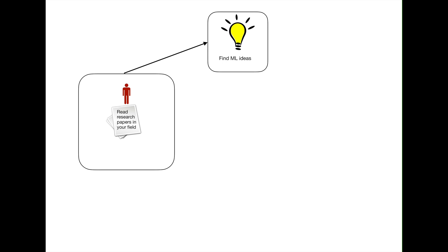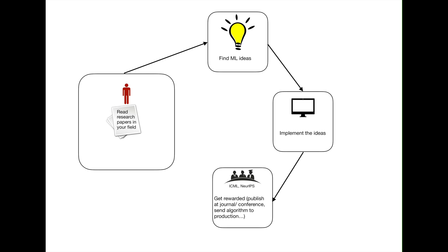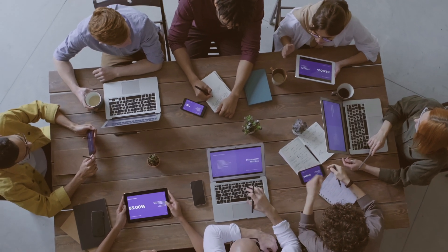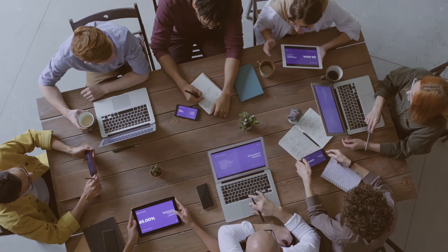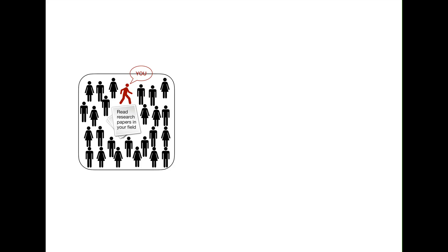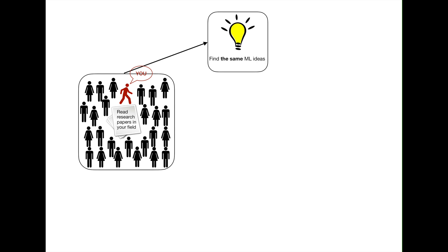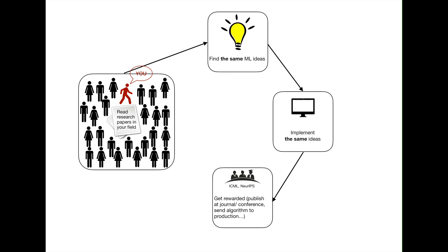Now, how do we tackle those challenges? If you read recent research papers in your field, you are going to find ideas. With those ideas, you may derive an algorithm or submit a paper to a machine learning conference or journal. However, there are thousands, if not tens of thousands, of researchers and engineers out there who work in the same field as you. Those people have also read the recent papers in your field, just like you, and therefore they are going to find the same ideas as you. They may also submit those papers to the same machine learning journals or conferences. And if one of those thousands of people was faster than you, then your work is going to be rejected.